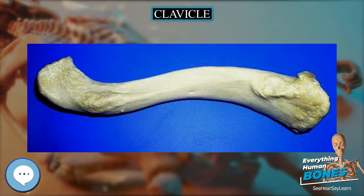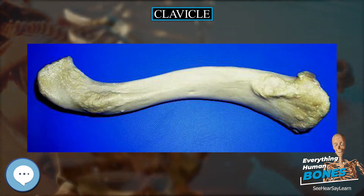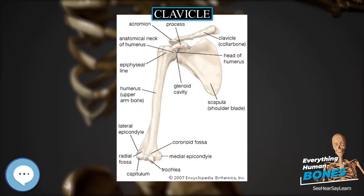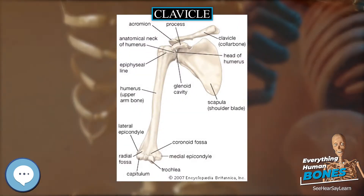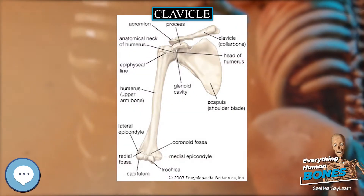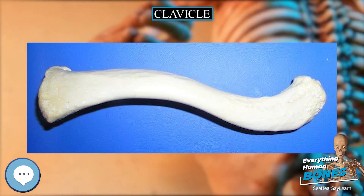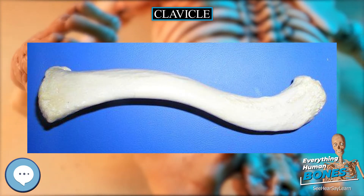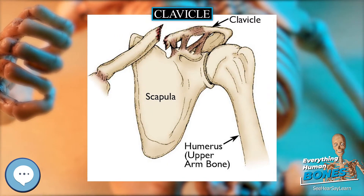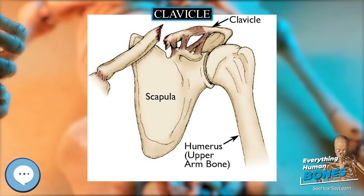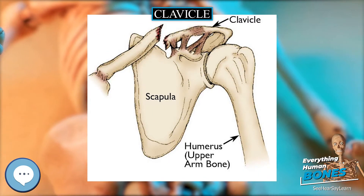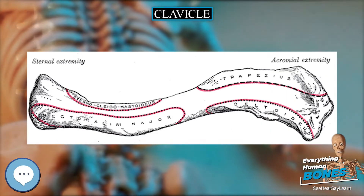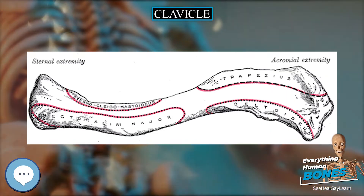It is a touchable bone, and in people who have less fat in this region, the location of the bone is clearly visible, as it creates a bulge in the skin. It receives its name from the Latin clavicula, meaning 'little key,' because the bone rotates along its axis like a key when the shoulder is abducted. The clavicle is the most commonly fractured bone. It can easily be fractured due to impacts to the shoulder from the force of falling on outstretched arms or by a direct hit.